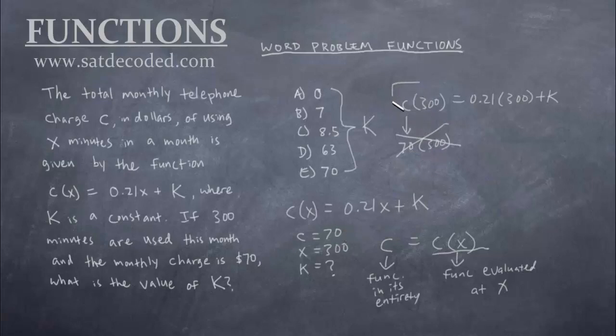So this whole thing, c(300), is actually just equal to 70 itself. So 70 equals all of this: 70 = 0.21 times 300 + k. And that's really the only pitfall of this question. If you can get past that, then you're golden.